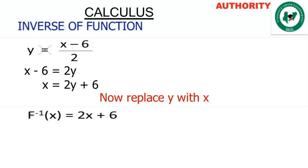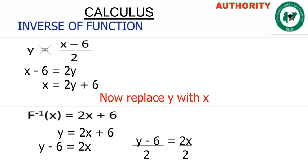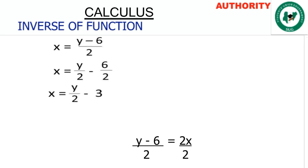Let's verify by finding the inverse of 2x + 6. First, replace f(x) with y: y = 2x + 6. Now make x the subject: take 6 to the other side to get y − 6 = 2x. Divide both sides by 2: (y − 6)/2 = x. So x = (y − 6)/2.